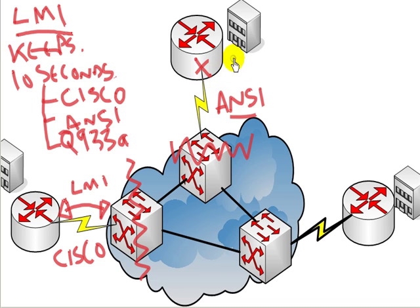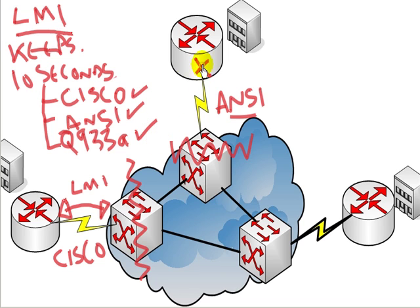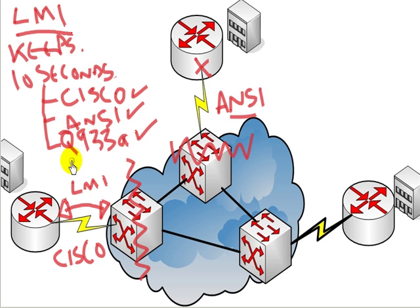Cisco routers will attempt all three types — if Cisco doesn't work it will attempt ANSI and then Q933A, so it should work regardless. However, there can be problems on a frame relay network. I've seen problems where someone has hard-coded a certain LMI type for whatever reason and it hasn't worked.